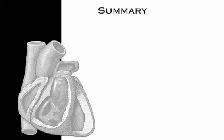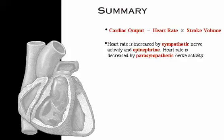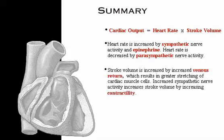Here's a summary: cardiac output equals heart rate times stroke volume. Heart rate increases with sympathetic nerve activity and epinephrine, and decreases with parasympathetic nerve activity. Stroke volume is increased by greater venous return, which results in more stretching of cardiac muscle cells, and by increased sympathetic nerve activity, which increases contractility.